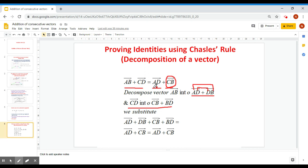So substituting on this side, in the place of AB, I write AD plus DB. In the place of CD, I write CB plus BD.